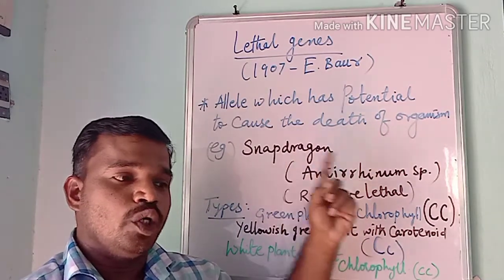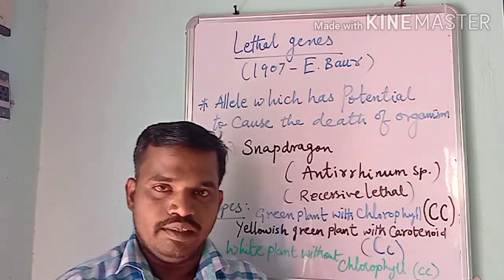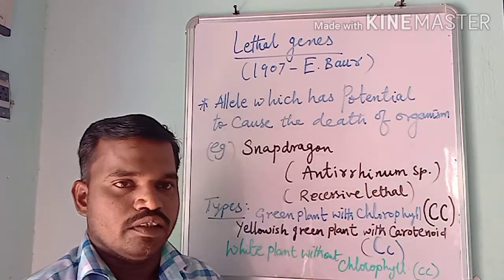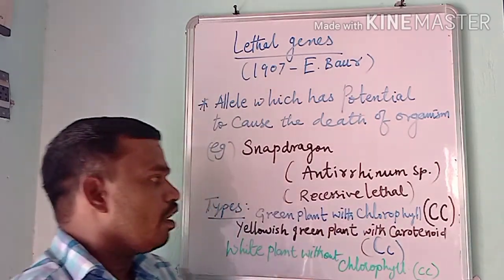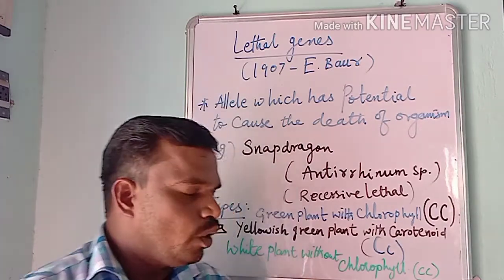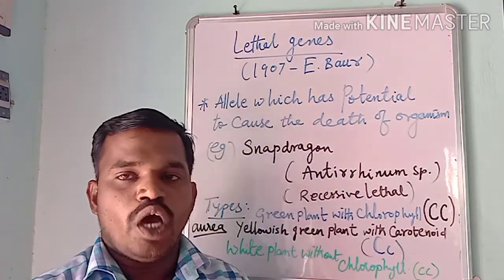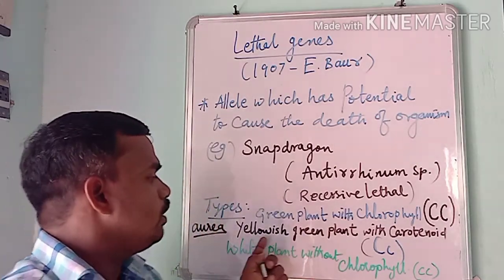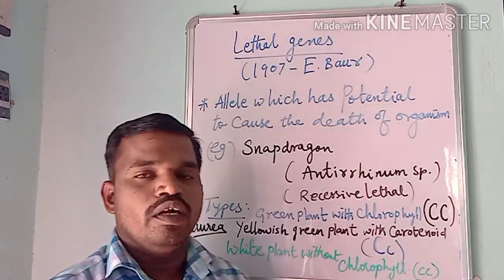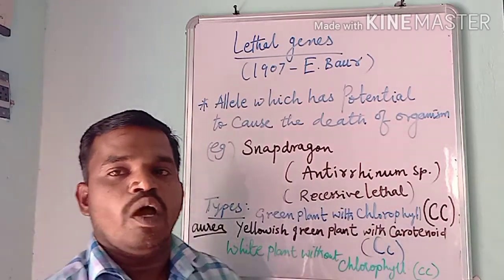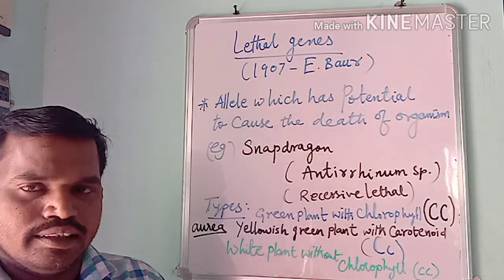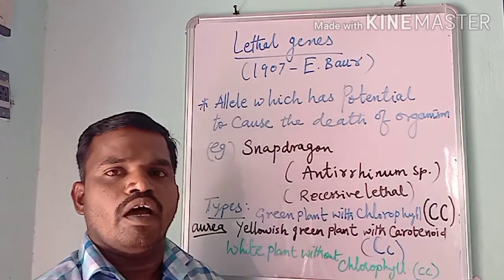The yellowish-green plants with carotenoids are having one dominant allele and one recessive allele — these are called aurea plants. They are pale yellow or pale green in color and are heterozygous. The last type are white plants, without chlorophyll. These white plants carry recessive alleles, which are lethal to the plants and lead to their death.